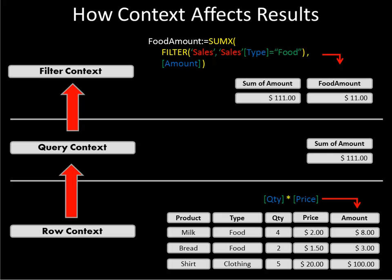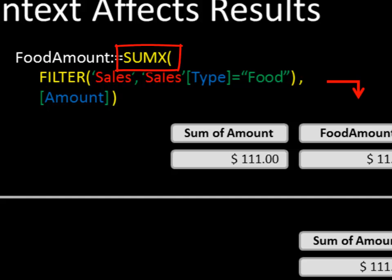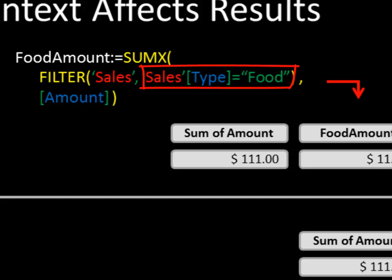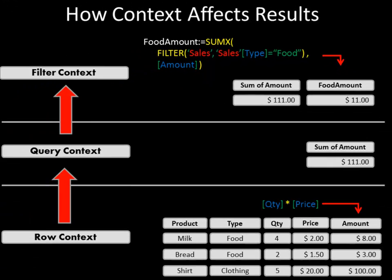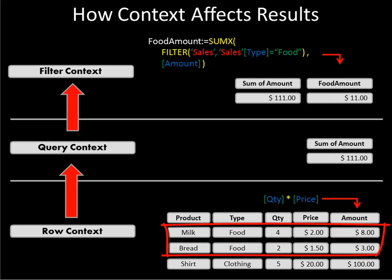The filter context is where we apply filters on top of all of that, and it can be applied through slicers or within calculations themselves. In this case, we've added a calculation called food amount using SUMX over a FILTER function. FILTER returns a table — in this case the sales table — filtered by the expression where sales type equals food. So the calculation says: go into the sales table, return a filtered table of only food type rows, then sum the amount column for every row. Our filter context has been modified to include only the food rows, and the addition of those yields a food amount of $11.